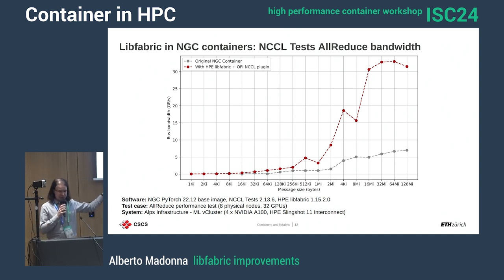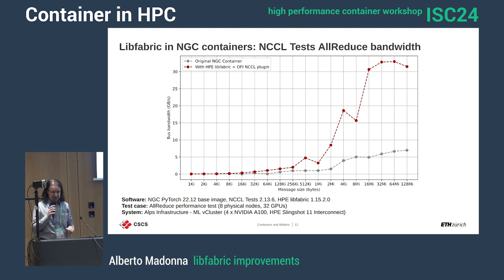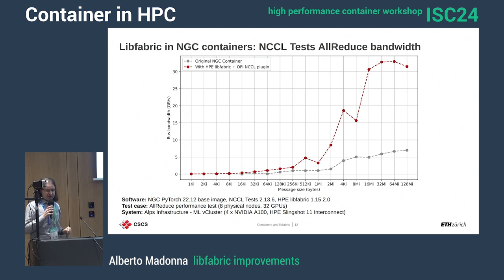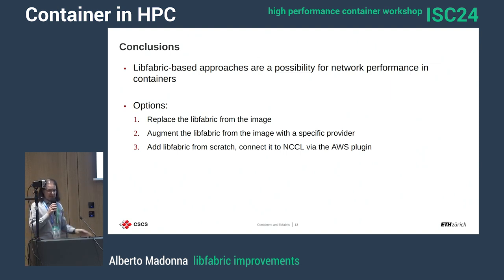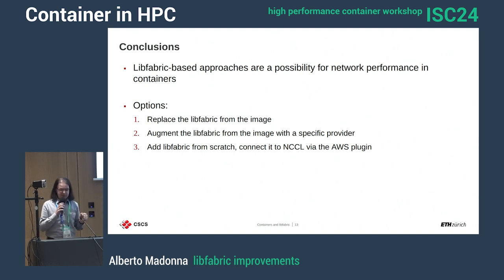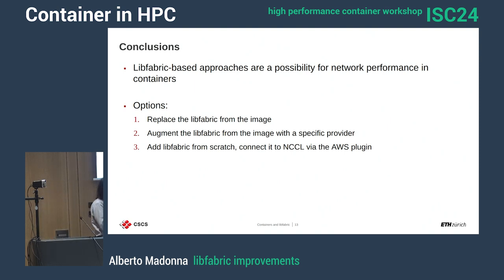This is also a test we made on Alps: the gray line and gray dots are the original NGC containers, and the red dots are the results once we added the HP custom LibFabric and the NCCL plugin. To recap: approaches based on LibFabric and communication frameworks are an alternative when we want near-native network performance on containers — we can replace LibFabric, augment LibFabric, or in the case of NGC containers, bring everything from the host. Thank you.